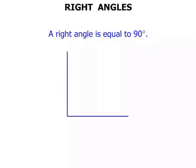In this lesson we will do some work on right angles. A right angle is equal to 90 degrees. So this is an example of a right angle.